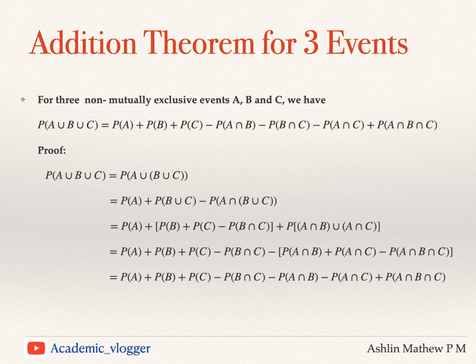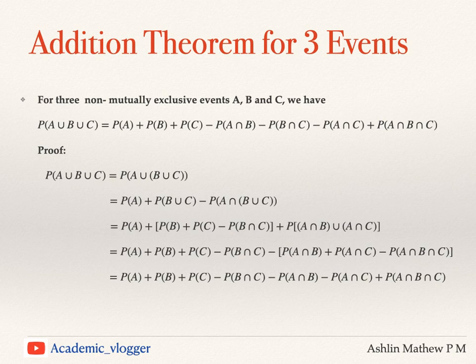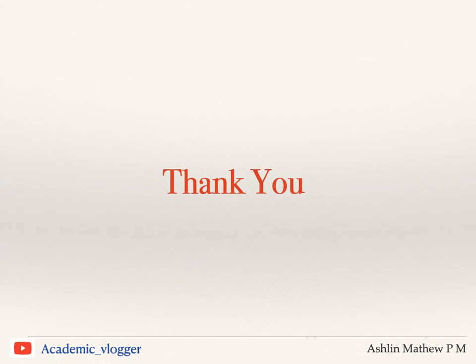We get probability of A plus probability of B plus probability of C minus probability of B intersection C, and then (A intersection B) union (A intersection C) expands to probability of A intersection B plus probability of A intersection C minus probability of A intersection B intersection C. So probability of A union B union C equals probability of A plus probability of B plus probability of C minus probability of A intersection B minus probability of B intersection C minus probability of A intersection C plus probability of A intersection B intersection C. This completes the proof of the addition theorem for three events. In this video we have discussed the addition theorem for two events and for three events. Thank you.